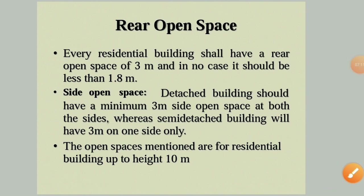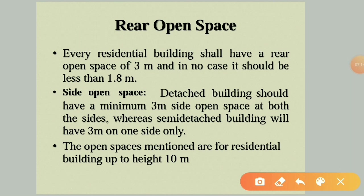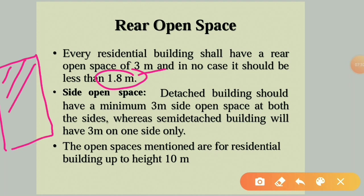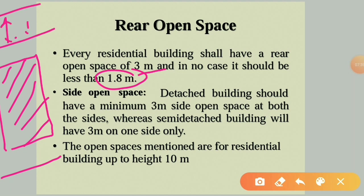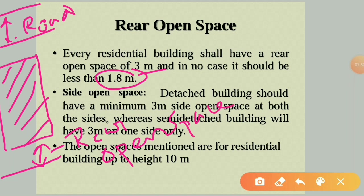For rear open space: every residential building shall have a rear open space of 3 meters, and in no case should it be less than 1.8 meters. So the maximum is 3 meters and the minimum is 1.8 meters to be provided at the rear of the building.